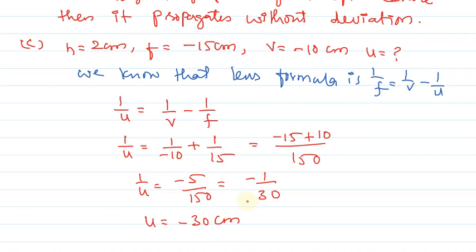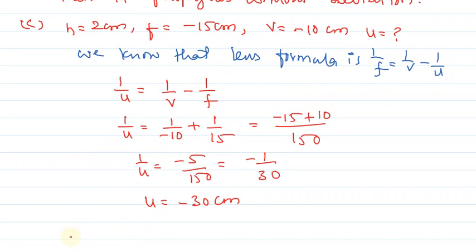Why minus 30 cm? Because object distance is always measured opposite to the direction of light rays. So the object distance value is 30 cm.